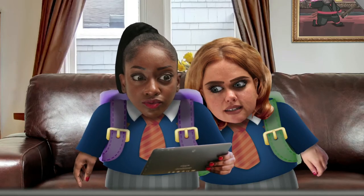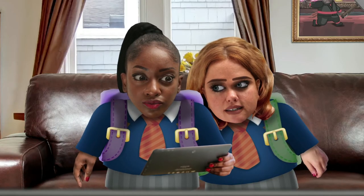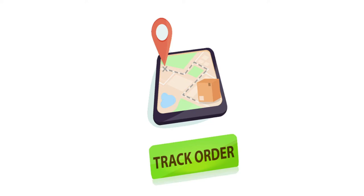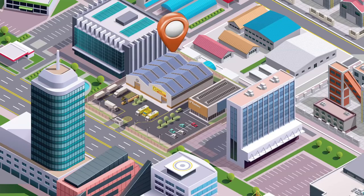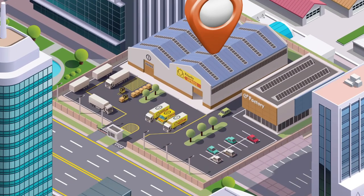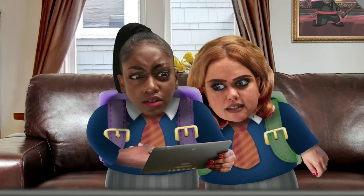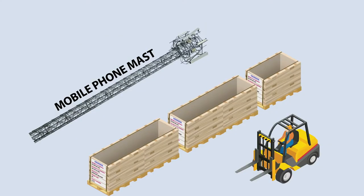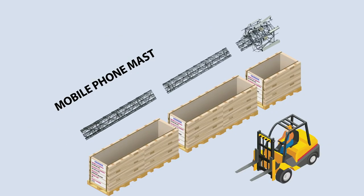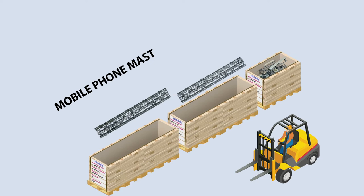We have located your order in our warehouse. Oh, it talks! Mobile phone mast. There it is. Amazing. Your order is too large to ship in one go. We have divided it into three separate packets.